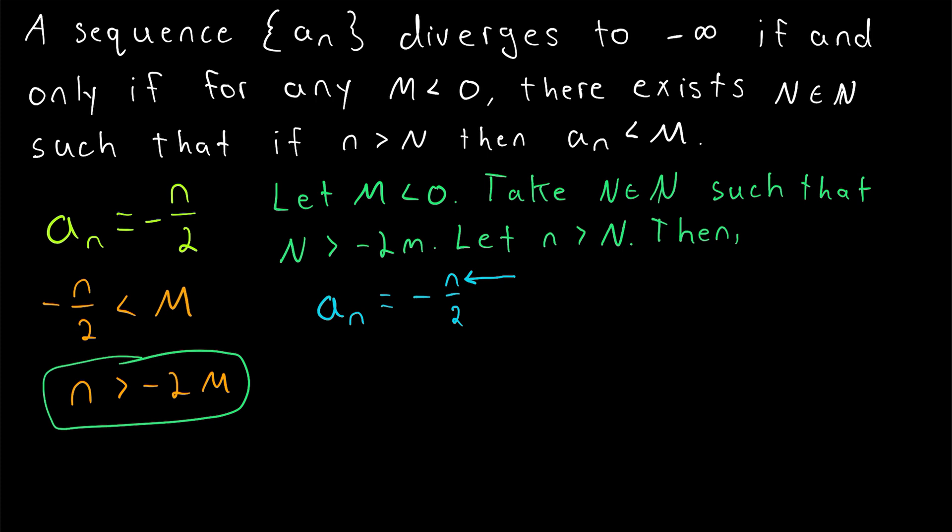n is positive. If we replace that with a smaller positive number, like negative 2M, then certainly the resulting expression will be greater than negative n over 2.